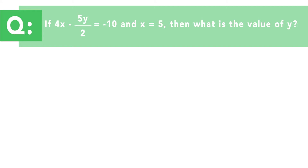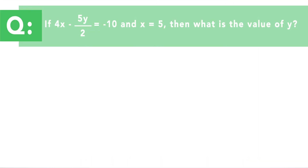Now let's look at the last question. If 4x minus 5y over 2 equals negative 10 and x equals 5, then what is the value of y? This is a very common question type — you're almost certainly going to see at least one question, probably multiple questions like this on the exam. Essentially it's solving for some sort of variable, and you'll have to reorder or balance the equation to isolate the variable. The answer options are 12, 0.625, negative 4, or negative 12.